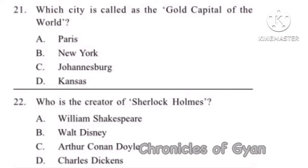Question 21: Which city is called the gold capital of the world? The correct answer is Option C, Johannesburg. Johannesburg is also known by its Zulu name eGoli, meaning 'city of gold'. When gold was discovered on this site in 1886, it earned the name City of Gold.